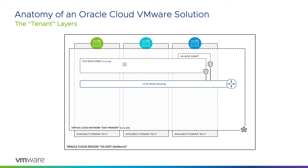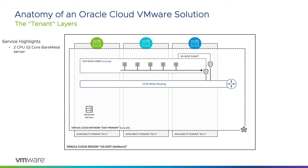In a typical network diagram, we will show these virtual machines connected to a network. But this is an Oracle Cloud VMware Solution demo, so let's take a look at those bare metal hosts, which brings vSphere into the picture. We'll show a single host for clarity here. The standard Oracle Cloud Infrastructure host is a two-CPU, 52-core bare metal server with 768 gigabytes of memory and 51.2 terabytes of storage.